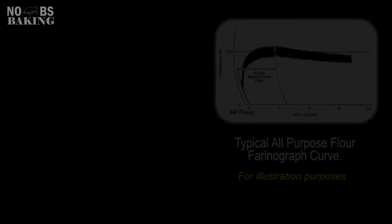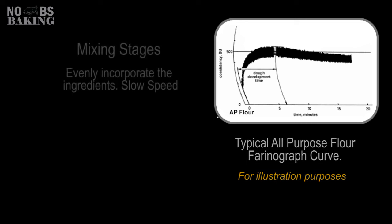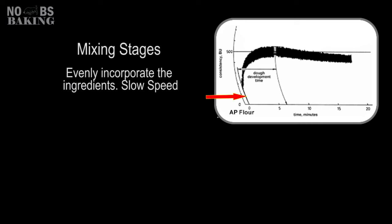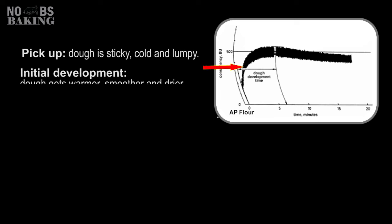As we talk about the stages of mixing, I'll go through each of these using a farinograph curve to illustrate the process. We'll get into the science of the curve a little bit later. The first stage of mixing is usually on number one speed and it's just to get all the ingredients incorporated. Pickup starts when the speed is increased to speed two, where the dough starts to come together. Stage one development is where the dough gets drier and starts forming into a cohesive mass, crossing the 500 line on the chart.